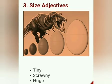Adjectives can also be described through sizes — tiny, scrawny, huge, giant, tall, short, long, etc.